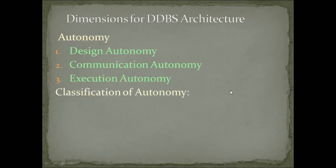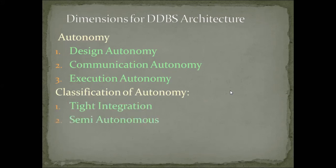Next is autonomy classification. The classification is: number one — tight integration, number two — semi-autonomous, and number three — total isolation. Classification of autonomy: tight integration means that only a single common view can be seen.